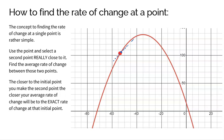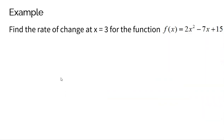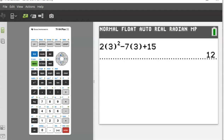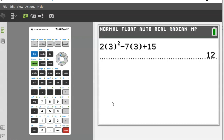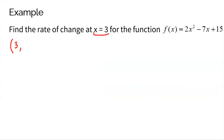Let's actually put this theory to the test. Let's find the rate of change at x equals 3 for this function. We have f(x) = 2x² − 7x + 15, and we want to find the rate of change at 3. So the point at x = 3: the y-value is found by plugging in — 2 times 3 squared minus 7 times 3 plus 15 — and I get 12. So the point I'm trying to find the rate of change at is (3, 12).